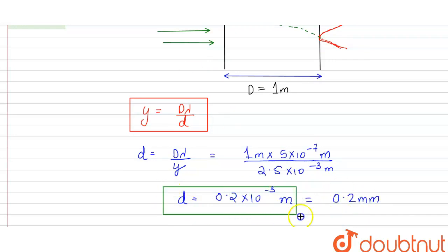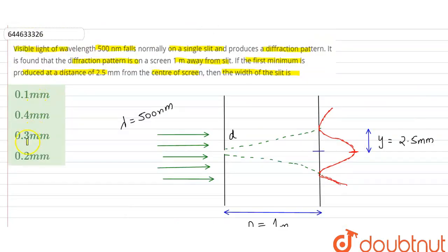So the width of the slit is 0.2 mm. Our correct option is option D, 0.2 mm. Thank you.